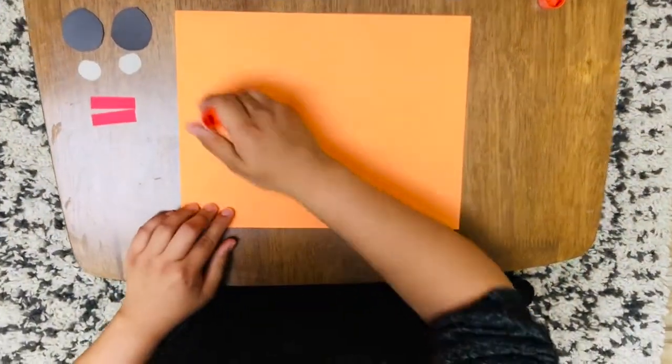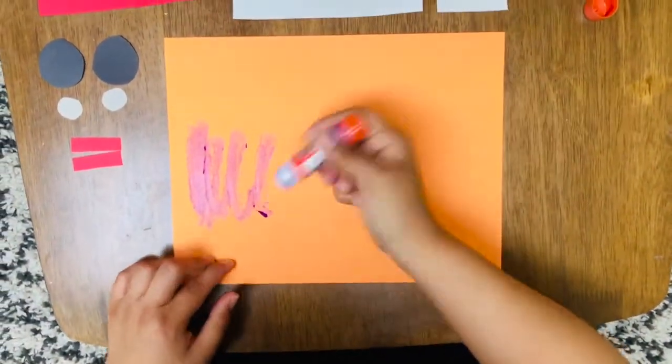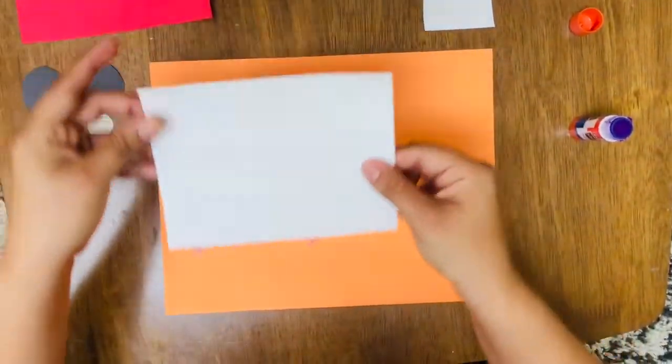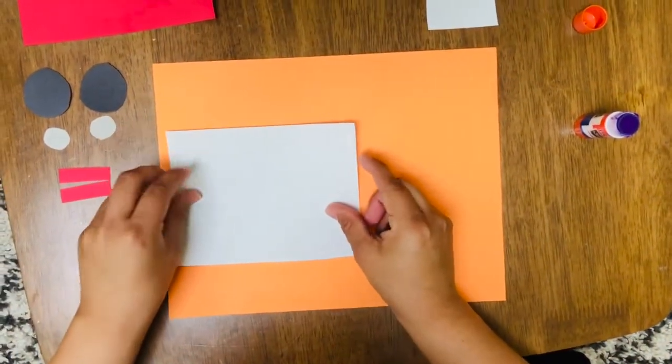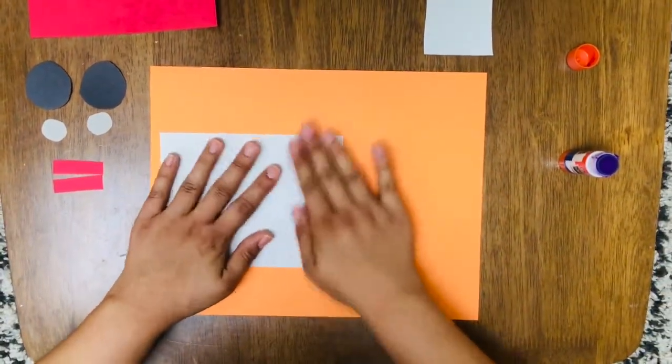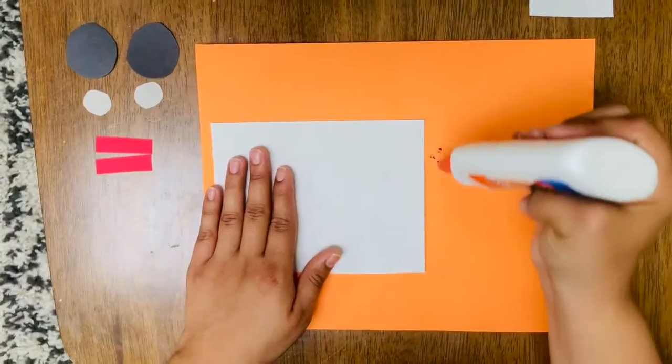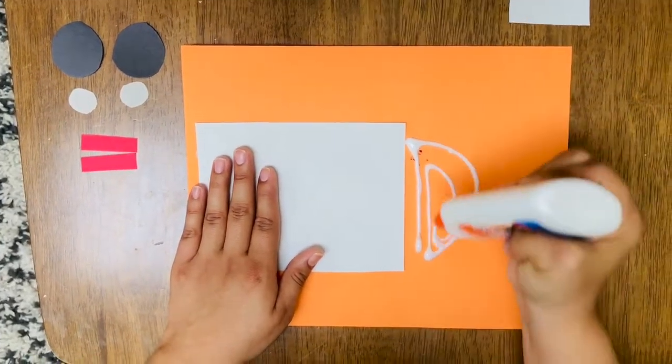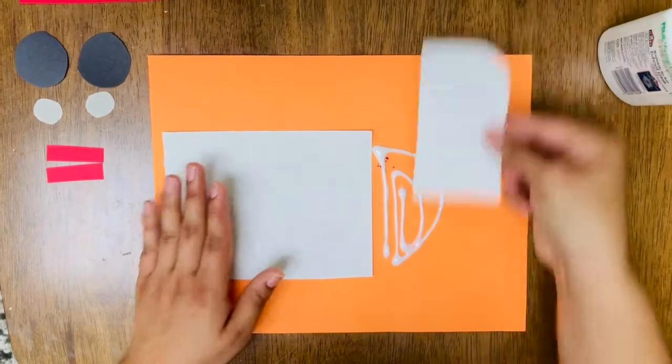Alright, so for this one you can place it wherever you like. We're going to start with our big rectangle. Alright, now we are going to use some wet glue and put on the front of our ambulance.